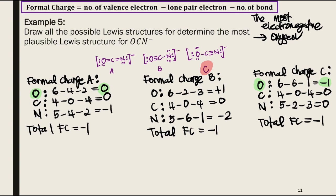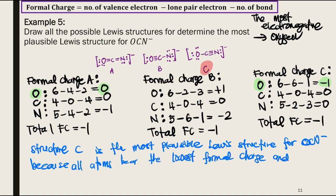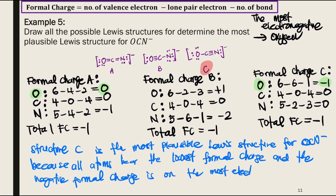This is how we write the explanation for why we choose Structure C as the most plausible Lewis structure for OCN⁻. That's all for this video — I hope you understand how to calculate formal charge and determine the most plausible Lewis structure. See you in the next video, take care and bye bye.